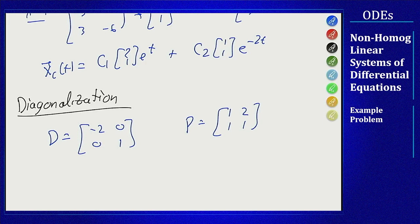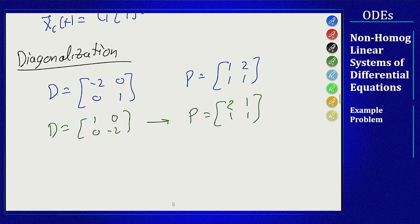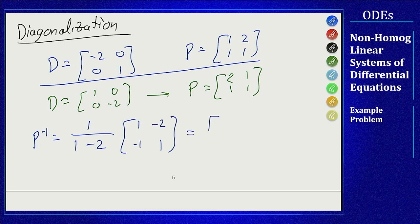I'm intentionally going in the reverse order from the homogeneous solution. You could also use D = [1, 0; 0, -2] with P = [2, 1; 1, 1] — either choice works as long as the eigenvector-eigenvalue pairings are correct. With P = [1, 2; 1, 1], P-inverse is (1/det) × [1, -2; -1, 1], and since det = 1 - 2 = -1, P-inverse = [-1, 2; 1, -1].